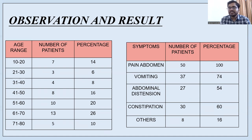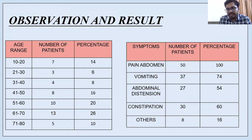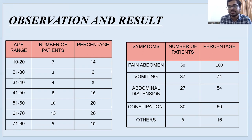All patients presented with the common symptom of abdominal pain. 37% had a symptom of vomiting, 27 patients had abdominal distension, and 30 had symptoms of constipation, while 8 people had symptoms other than the ones listed.